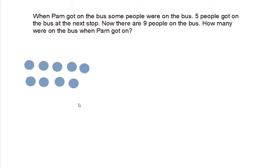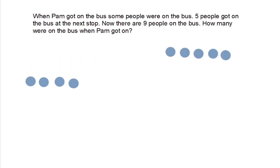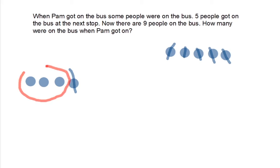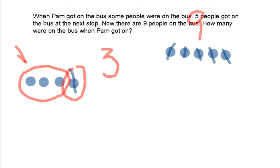Five people got on the bus at the last stop, so they couldn't be on the bus when Pam got on. Let's take five people and move them out of the way — you can take a line and cross them out, that works too. Now there are four people left, but of course one of them is Pam, so let's cross that out. How many people are left? Three. So how many people were on the bus when Pam got on? The answer is three. We worked backwards from nine, took away the five people that got on at the last stop, took away Pam, and we see that we have three left over.